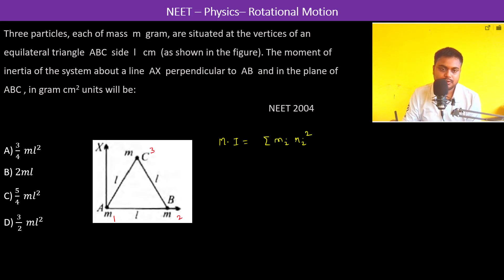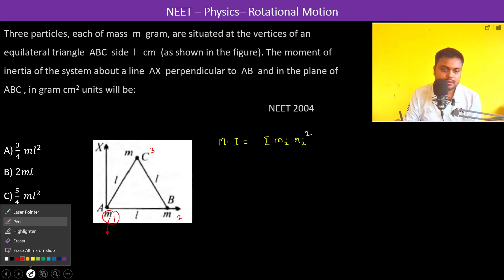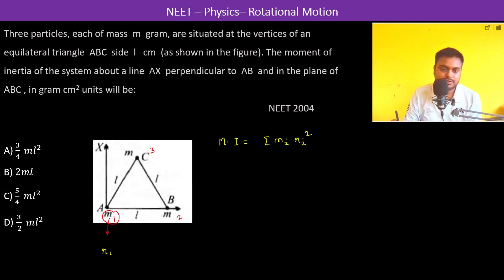Now for the first mass we have r_i, that is r_1, is equal to 0. For the second mass we have r_2 which is equal to l.